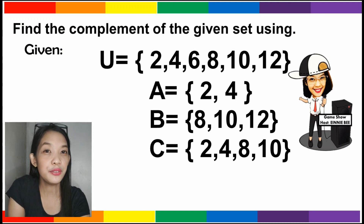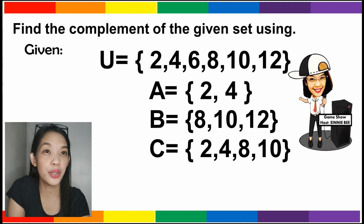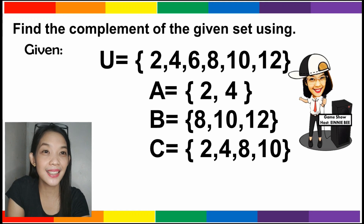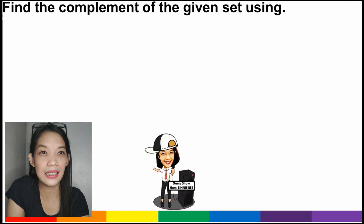From the given, our universal set has the elements 2, 4, 6, 8, 10, and 12. Our set A has the elements 2 and 4. Set B has the elements 8, 10, and 12. And set C has the elements 2, 4, 8, and 10. So we must find the complement of A, the complement of B, and the complement of C.